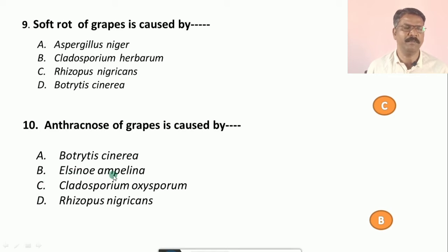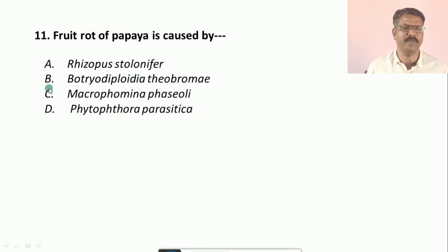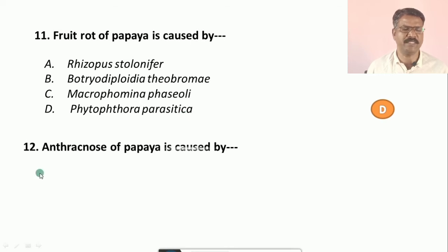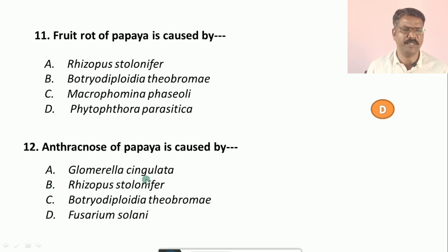Question number eleven: Fruit rot of papaya is caused by — options are: a) Rhizopus stolonifer, b) Botryodiplodia theobromae, c) Macrophomina phaseolina, d) Phytophthora parasitica. Question number twelve: Anthracnose of papaya is caused by — a) Glomerella singulata, b) Rhizopus stolonifer, c) Botryodiplodia theobromae, d) Fusarium solani. The correct option is a, that is Glomerella singulata.